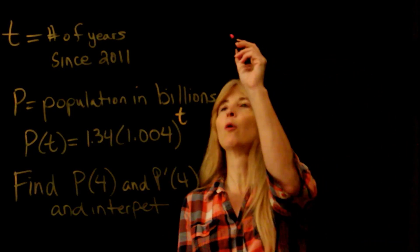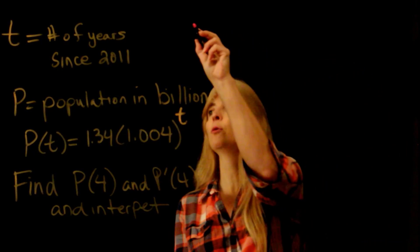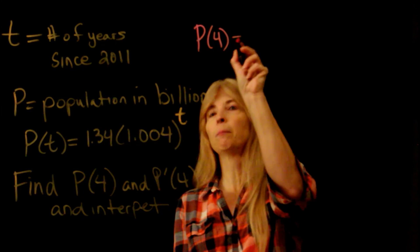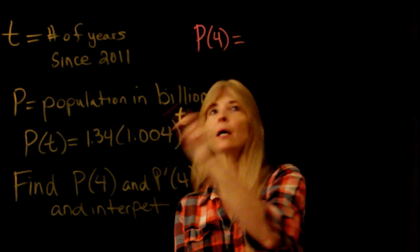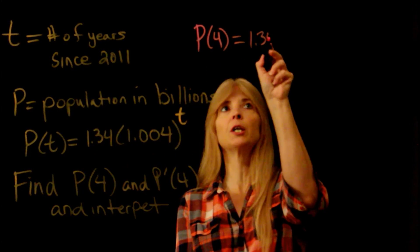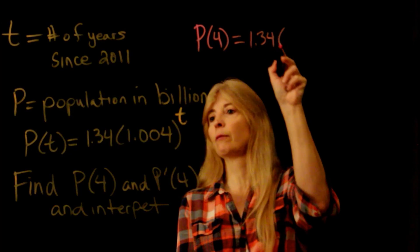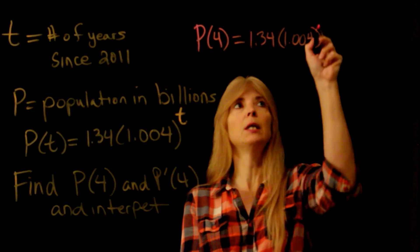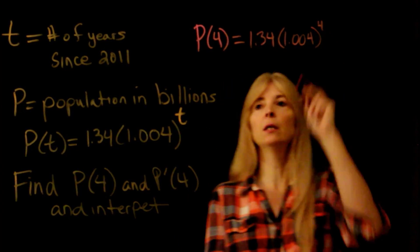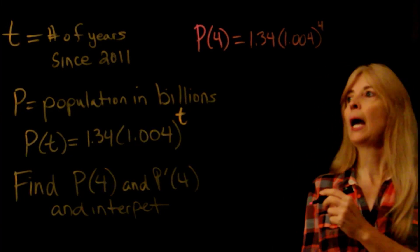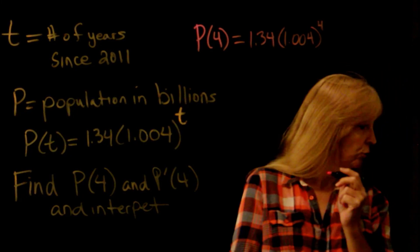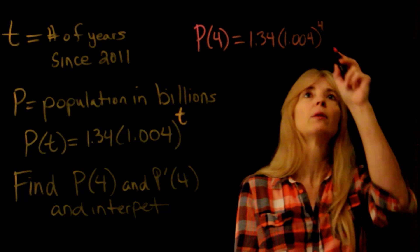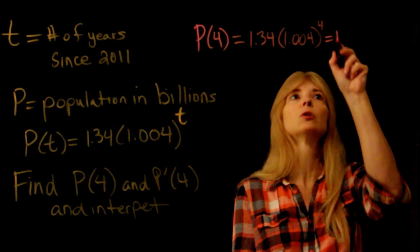p of 4 is what you've already learned how to do in algebra. You simply take your function that you're given, and where you see t, you plug in 4. When you do that, you should get 1.362.